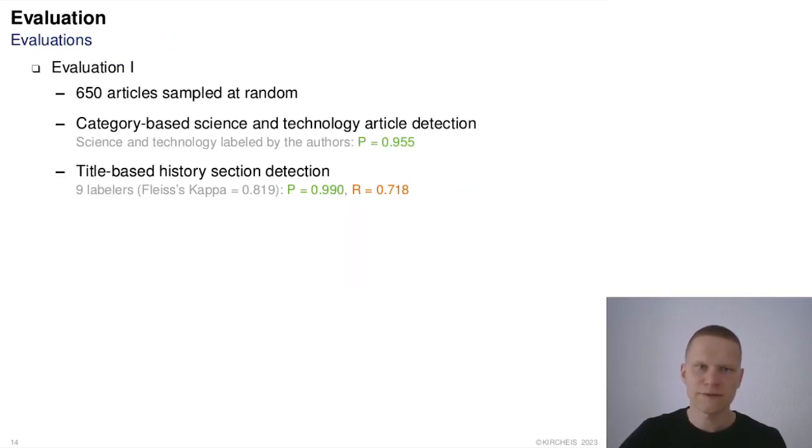A first evaluation of 650 randomly sampled articles showed that a category-based article detection, if properly fine-tuned, can result in an explorative corpus of articles, more than 95% of which cover science and technology. Using a title-based heuristic to find history sections while providing excellent precision only yields around 70% of all history sections.